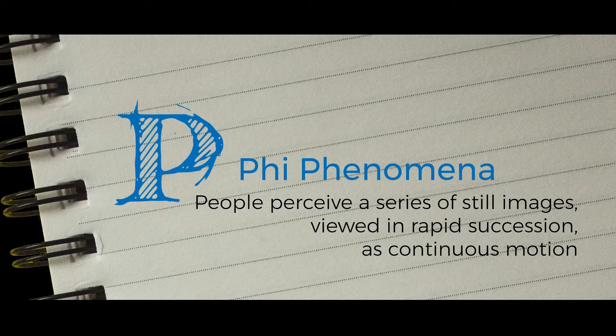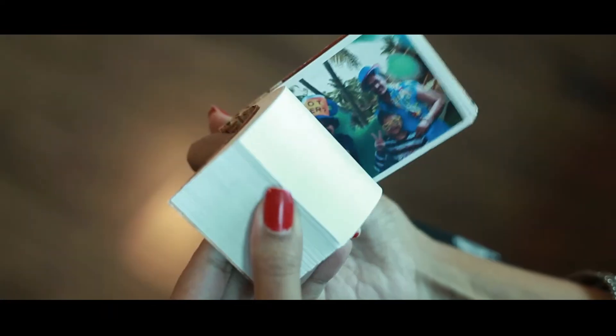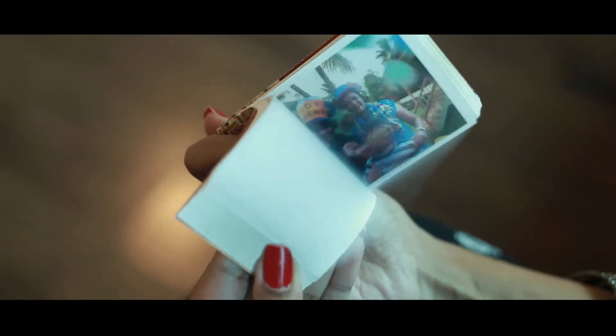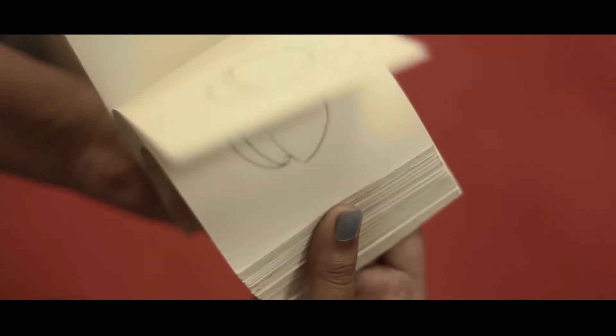P for Phi Phenomena. Remember the flipbooks that you had as a child, when you rapidly flip through pages? It appeared as if the still images were actually moving. This is a kind of perceptual illusion — it's an example of the Phi Phenomena: the illusion of seeing a series of still images as moving.